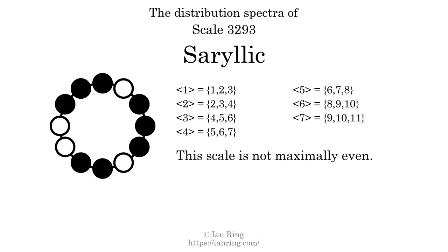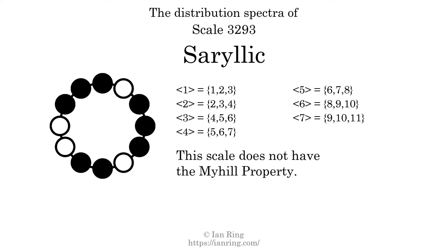If every spectrum has exactly 2 specific intervals, we call that the Myhill property. This scale does not have the Myhill property. Since the generic interval ranges overlap, this scale is an improper scale.